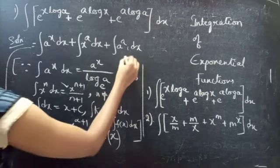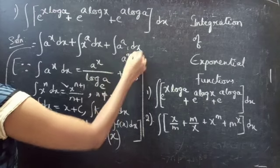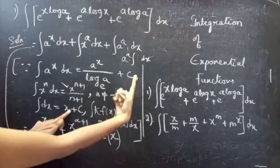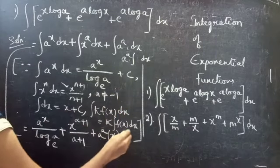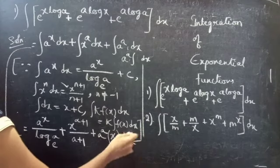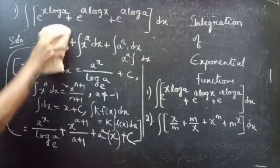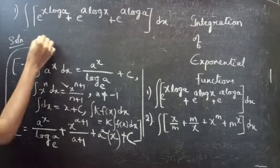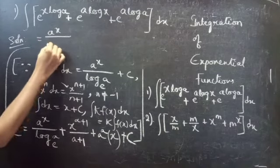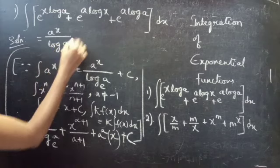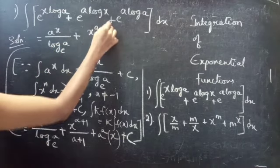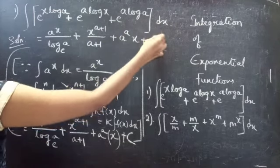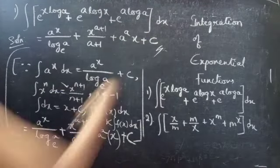You will get a^a times integral dx equals a^a times x. So the final answer is: a^x divided by log a to the base e, plus x^(a+1) divided by (a+1), plus a^a times x, plus constant c. This completes the first problem.